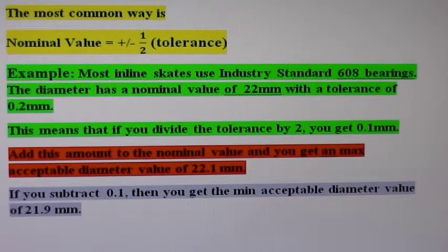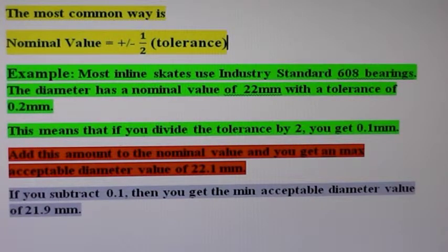Most inline skates use industry standard 608 bearings. The diameter has a nominal value of 22 millimeters with a tolerance of 0.2 millimeters.